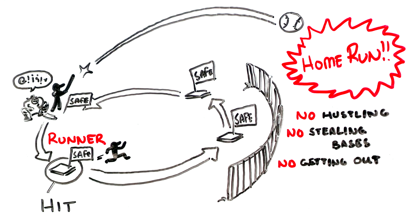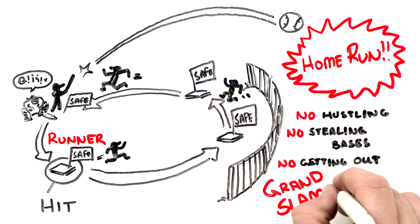If there's a runner on all three bases and the batter hits a home run, it's called a grand slam because all four offensive players can run the bases and get a free trip home.